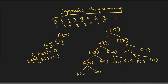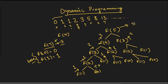Once recursion reaches the base cases, it returns 1 and 0. So f(2) returns 1 plus 0 which equals 1. Then f(3) returns 1 plus 1 which equals 2. Similarly, combining results up the tree gives f(5) equals 5. But if you notice, we are solving many sub-problems repeatedly, which increases the runtime complexity.